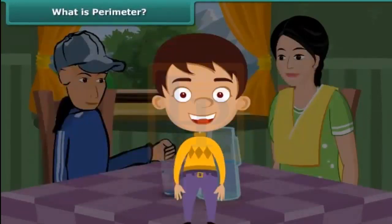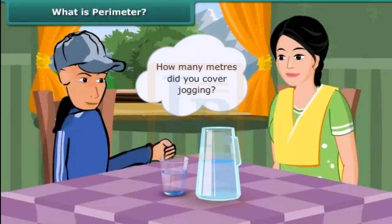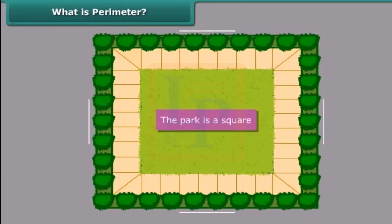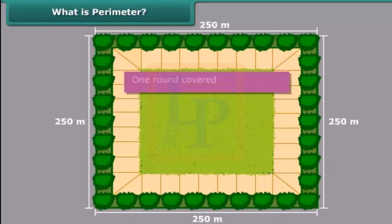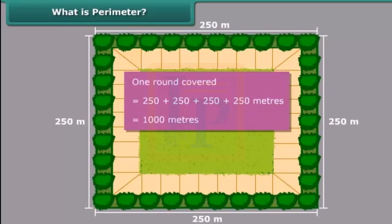Let us now try to answer your mother's question: how many meters did you cover jogging? In every round of jogging, you covered the 4 sides of the park. Since the park is a square, all its sides are equal. Thus, in one round, you covered 250 plus 250 plus 250 plus 250 meters — that is 1000 meters.